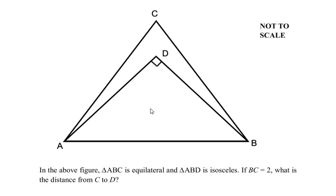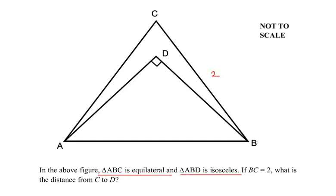Hello and welcome to my channel. In this video we are going to solve an example on triangles. In the above figure, triangle ABC is an equilateral triangle and triangle ABD is isosceles. If side BC is given as two units, what is the distance from C to D? That means we are supposed to find the distance from point C to point D.